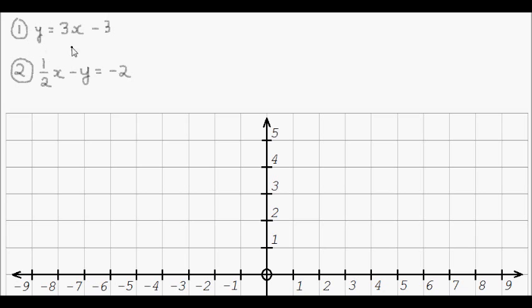I've got a system of two linear simultaneous equations here, with equation 1 being y equals 3x minus 3, and equation 2 being one-half x minus y equals negative 2. Now to graph these equations, I need them to be in the form of y equals mx plus c.